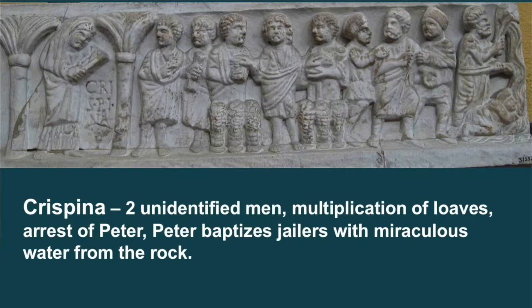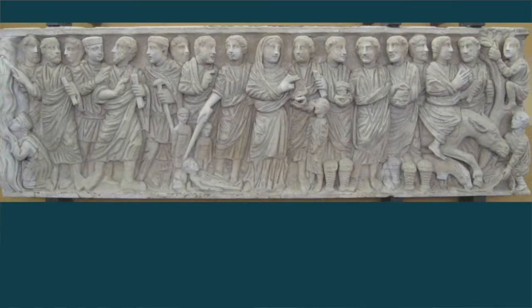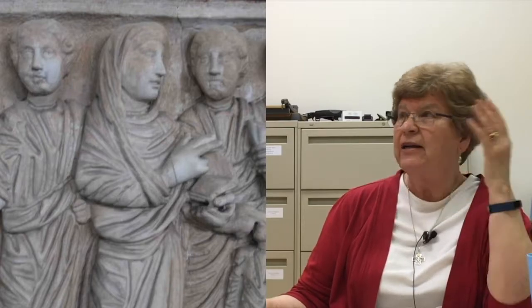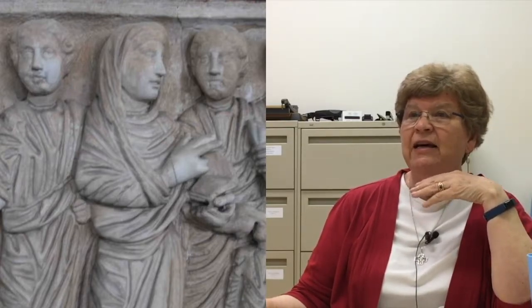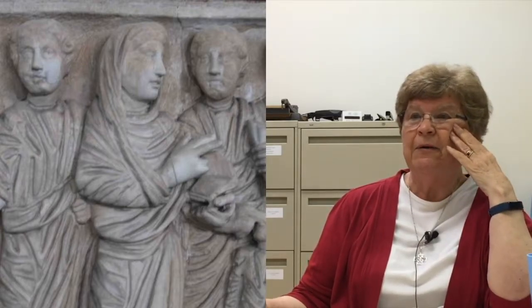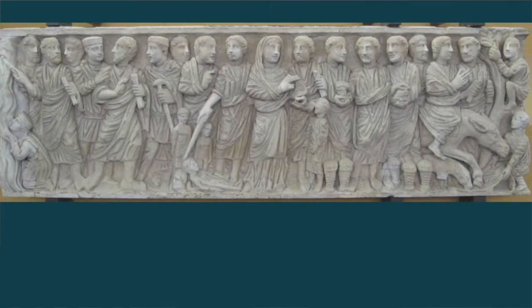Here we have Crispina, shown in a portrait tomb holding a codex, with biblical figures on either side—the multiplication of the loaves, the arrest of Peter, and Peter getting water from the rock, which is from the Acts of Peter. Here's another Christian tomb with a female portrait: she holds a codex and has her hand in a speech gesture. The biblical stories on either side include Jesus healing the blind person, the multiplication of the loaves, Jesus's entry into Jerusalem, and the raising of Ezekiel.